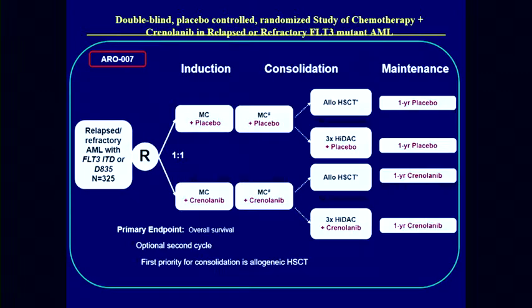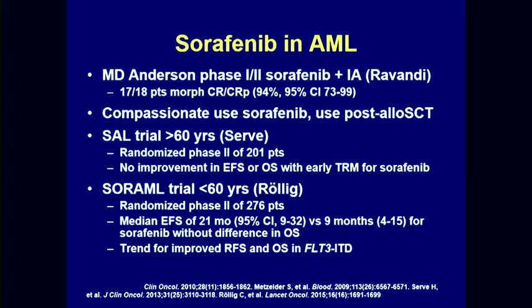That hasn't stopped other companies from pursuing the same idea. There's an ongoing trial in relapsed AML with crenolanib — a new-generation inhibitor hitting both ITD and TKD — combined with mitoxantrone and cytarabine plus placebo or crenolanib, followed by allogeneic transplant and post-transplant use of the drug. There are also trials with sorafenib, which is more readily available since it's already approved for liver and renal cancer.